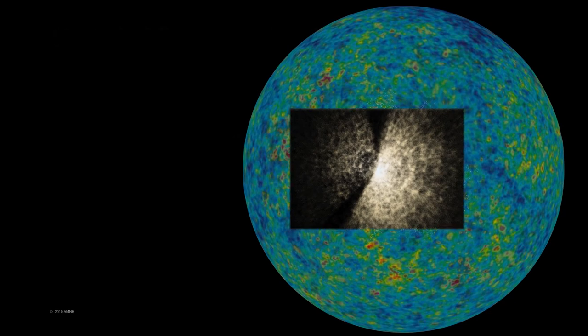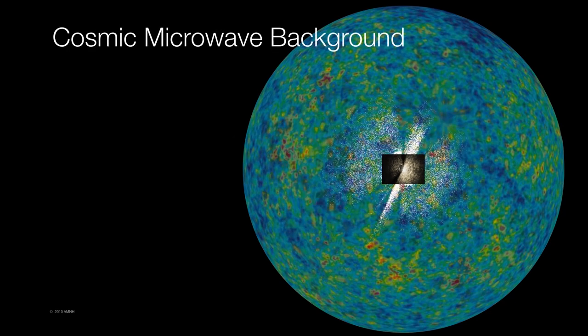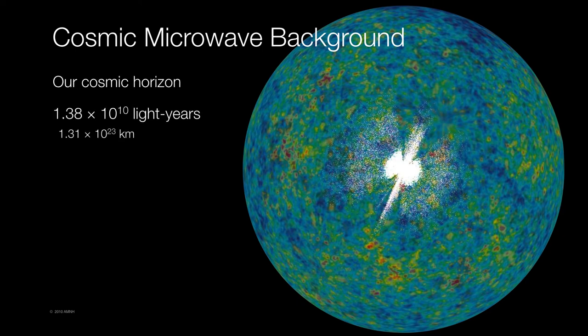Yet every one of the galaxies lays before something called the cosmic microwave background. It's the leftover radiation from the Big Bang itself, and it represents our cosmic horizon at a distance of 10 to the 23rd kilometers.